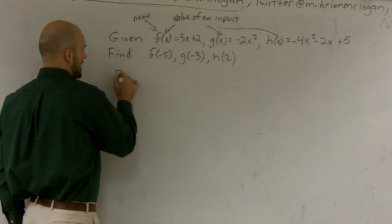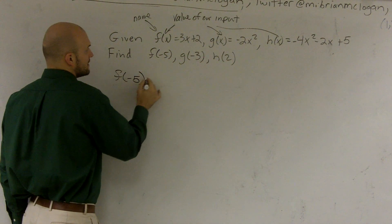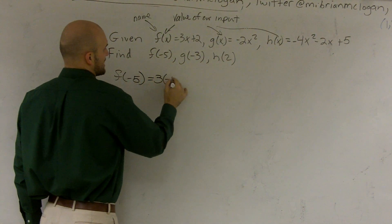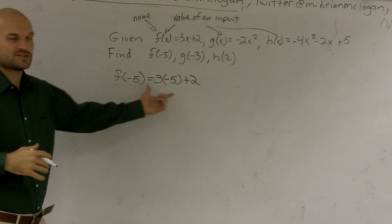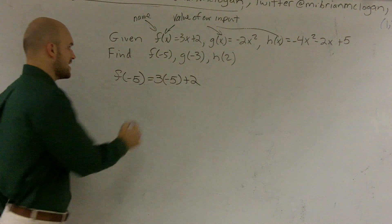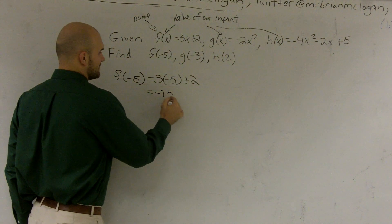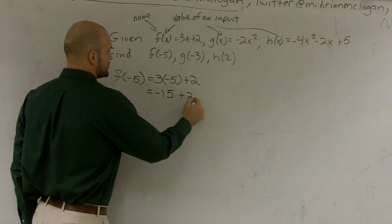So to do this one, I do f of negative 5 equals 3 times negative 5 plus 2. Then, let's just do the algebra. 3 times negative 5 equals negative 15 plus 2.